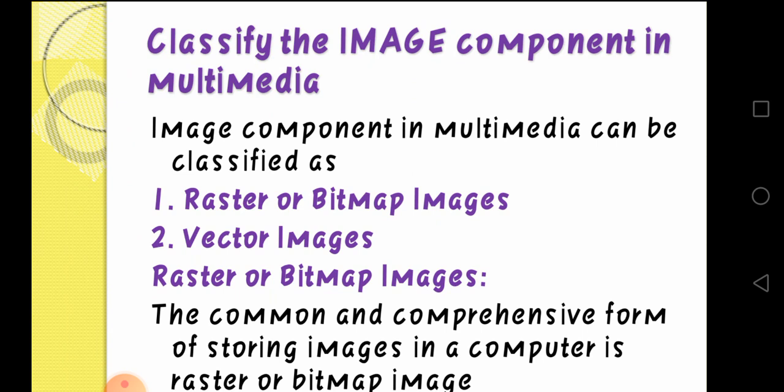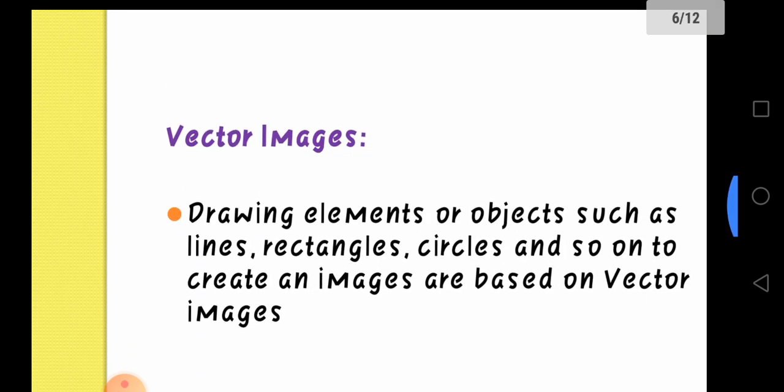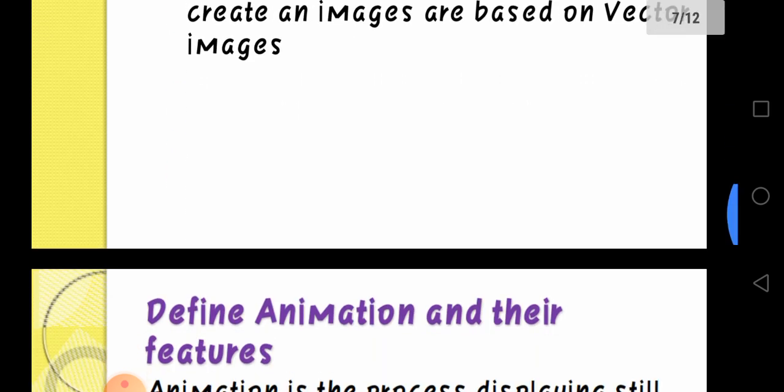Images are made up of pixels — tiny dots. Next, vector images: image clarity is based on measurements. Drawing elements or objects such as lines, triangles, circles and so on create an image based on vector images.